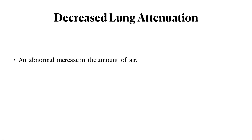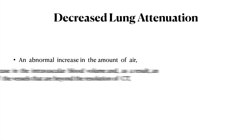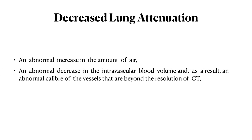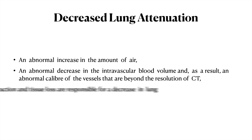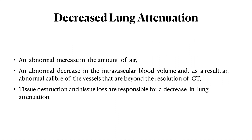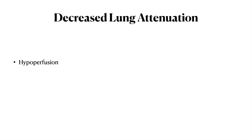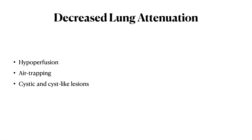Decreased lung attenuation results from an abnormal increase in the amount of air, an abnormal decrease in intravascular blood volume due to abnormal calibre of vessels beyond CT resolution, and tissue destruction or tissue loss. The main reasons for decreased attenuation are hypoperfusion, air trapping, cystic and cyst-like lesions, and pulmonary emphysema.